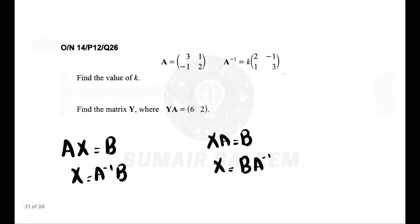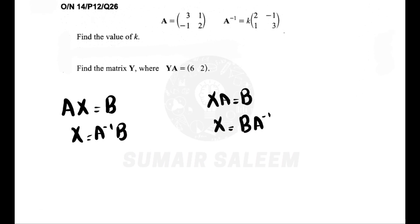Now one last thing: AX equals B. If I need to find X, A will go to the other side. But you need to know one rule. If A is written before X, then A inverse will also come before X. If A is written after X, then A inverse will also come after. Please understand this.